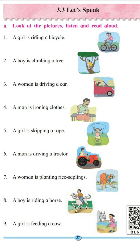Number 4. A man is ironing clothes. What is the man doing? The man is ironing the clothes. What action is happening over here? The action of ironing. So the verb is ironing.